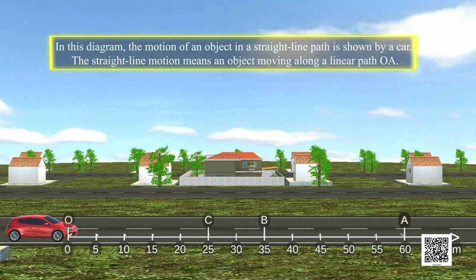In this diagram, the motion of an object in a straight line path is shown by a car. The straight line motion means an object moving along a linear path OA.